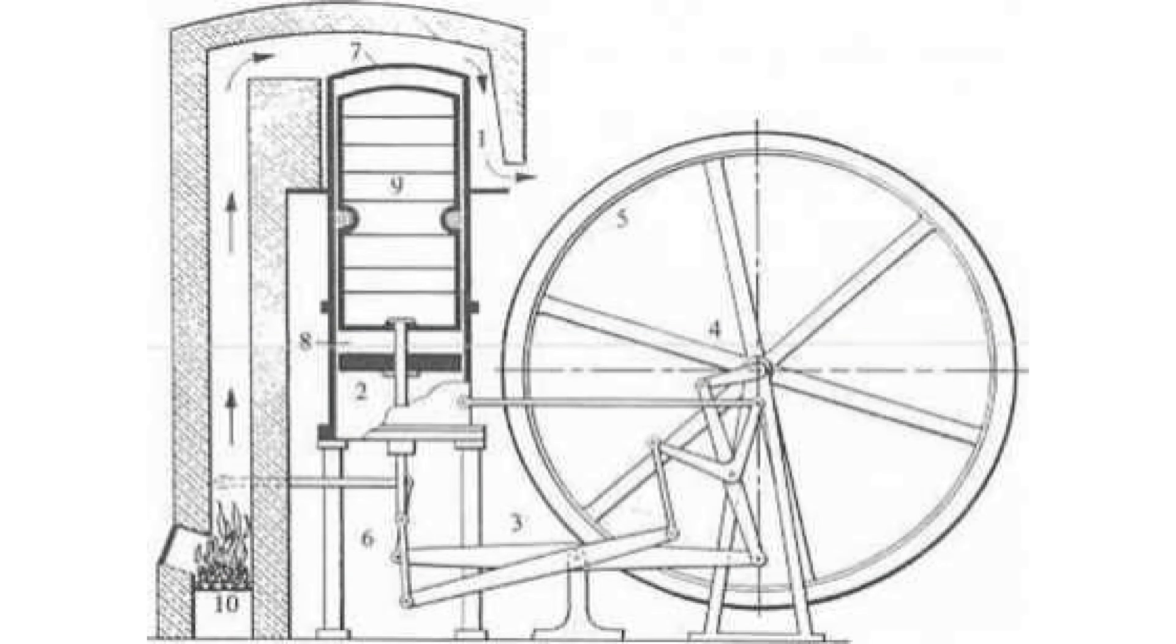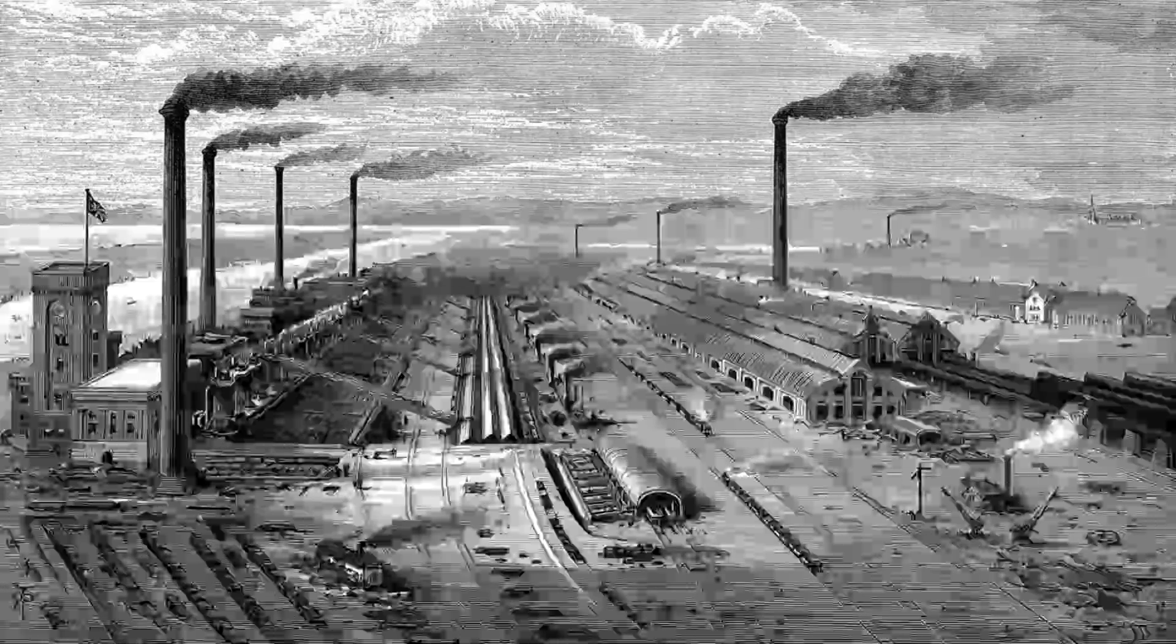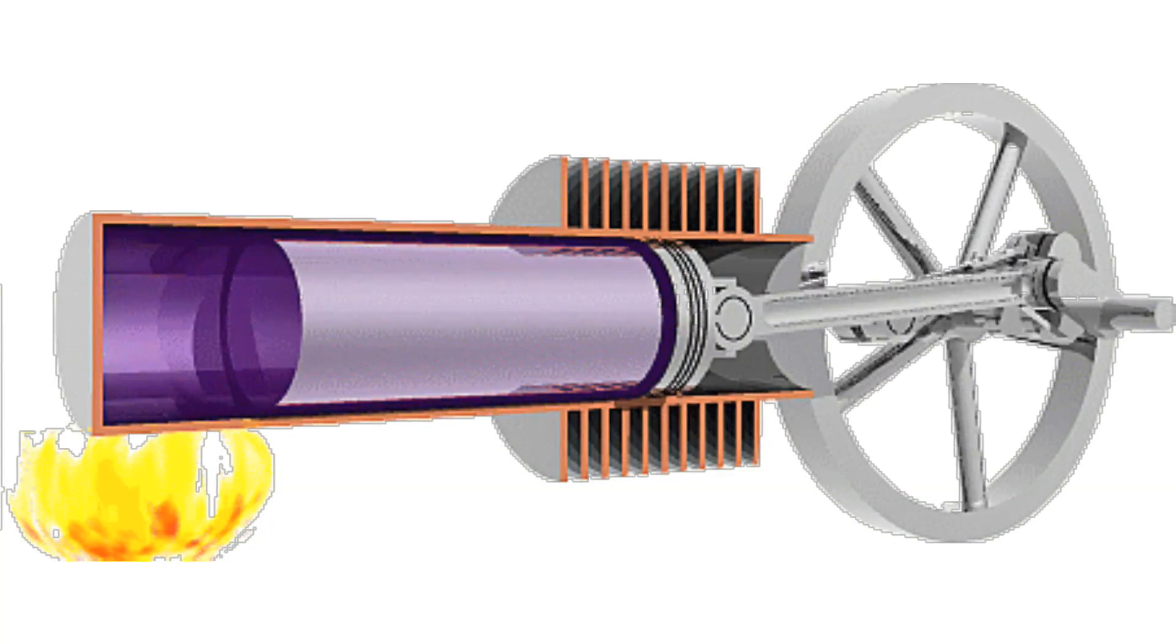The first practical example of a closed-cycle air engine in 1816 was patented by a Scottish pastor, Robert Stirling. In contrast to steam engines, it does not produce very high pressure. Therefore, it is safe.